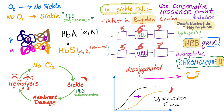Where is the gene? The HBB gene — to remember it, that stands for the hemoglobin beta chain gene — on chromosome 11. So the defect is a non-conservative missense point mutation, a single nucleotide polymorphism, leading to valine instead of glutamic acid at position number 6 in the beta globin chain on the HBB gene on chromosome 11.